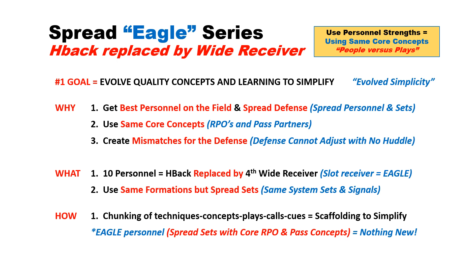What we're doing is ten personnel. We're going to take the H-back and replace them with a fourth wide receiver, what we call Eagle personnel grouping. We use the same formations, but obviously spread sets. And how we're going to do this, as always, we'll just chunk everything together. So it's nothing new for us, but obviously creates some problems for the defense.